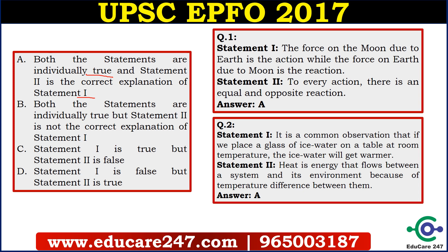Question 2 is: it is a common observation that if we place a glass of ice water on a table at room temperature, the ice water will get warmer. Statement 2 is: heat is energy that flows between a system and its environment because of a temperature difference between them. This is the concept of heat flow — heat flows from one system to another if there is a temperature difference. Statement 2 is the correct explanation of statement 1, and both statements are individually correct, so here A is the answer.